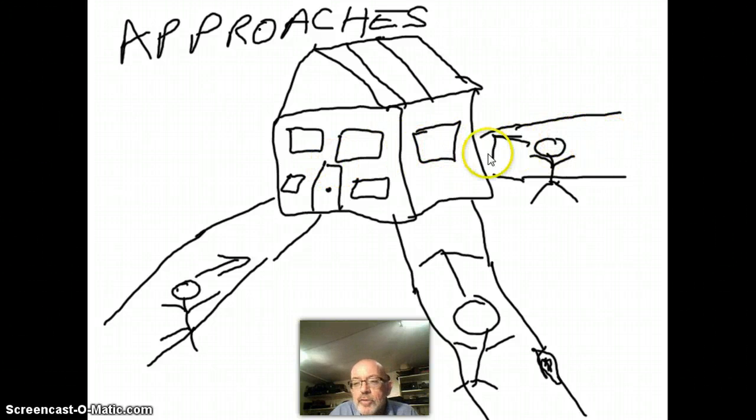They're going toward the path there and they would see one big window here and maybe a couple of these. The person at the back approaches from a different direction again and only sees the back window and misses everything at the front.